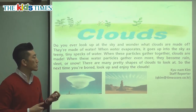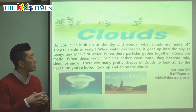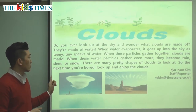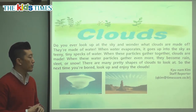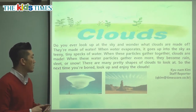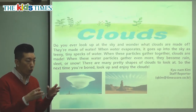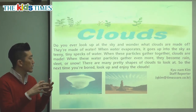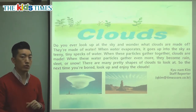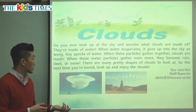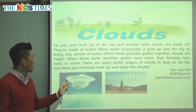When these water particles gather even more, they become rain, sleet, or even snow. It depends on the air — how cold or how warm the air is. When the clouds are made and more tiny particles of water gather, it can turn into rain, sleet — which is a mixture of snow and rain — or just snow.